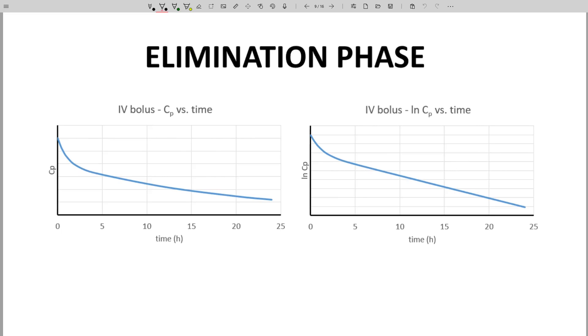On the left is CP time, and on the right is natural log CP versus time. The curve on the left shows that the molecule's concentration drops very sharply at first, and then the rate of decrease slows.